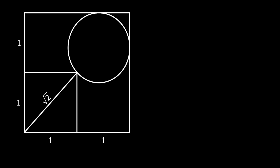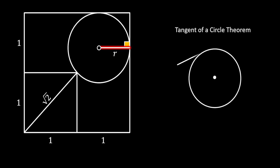Next, let's mark the center of our circle and pull the horizontal radius, which we label as r. The angle between this radius and the side of the square must be a right angle. We know this by the tangent of a circle theorem, which states that a radius drawn to the point of tangency is perpendicular to the tangent line. Since the side of the square is tangent to our circle, this angle must be 90 degrees.